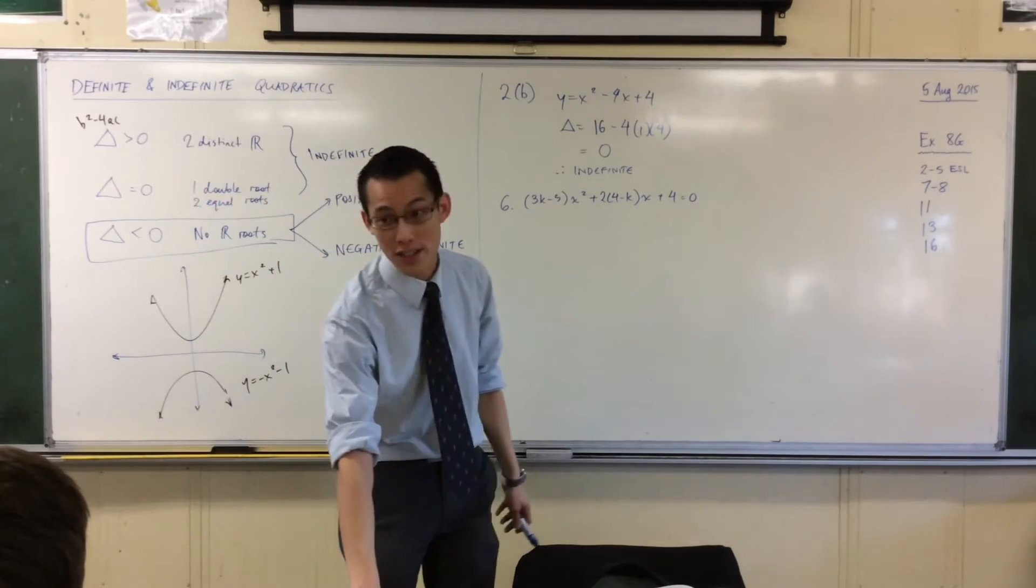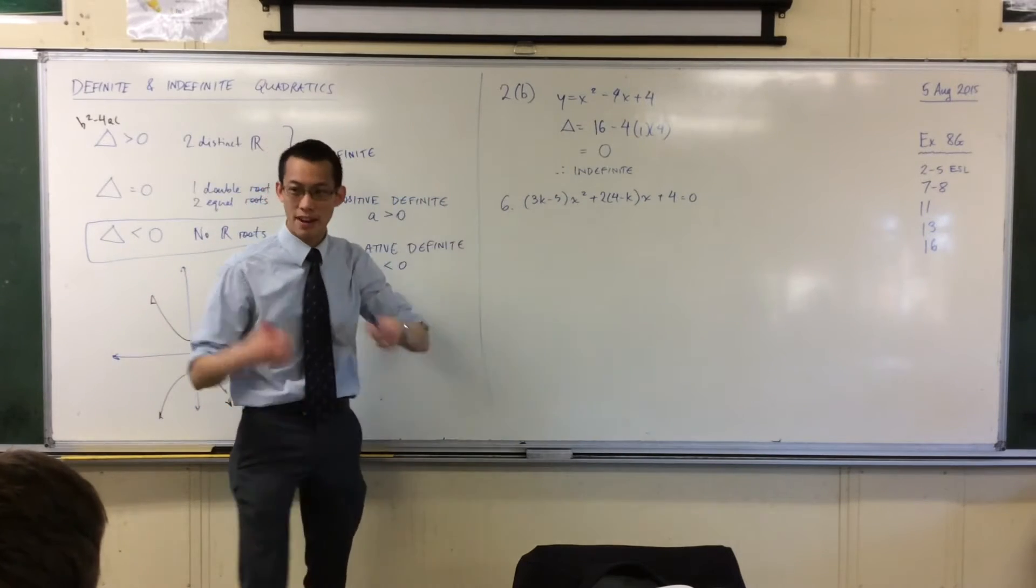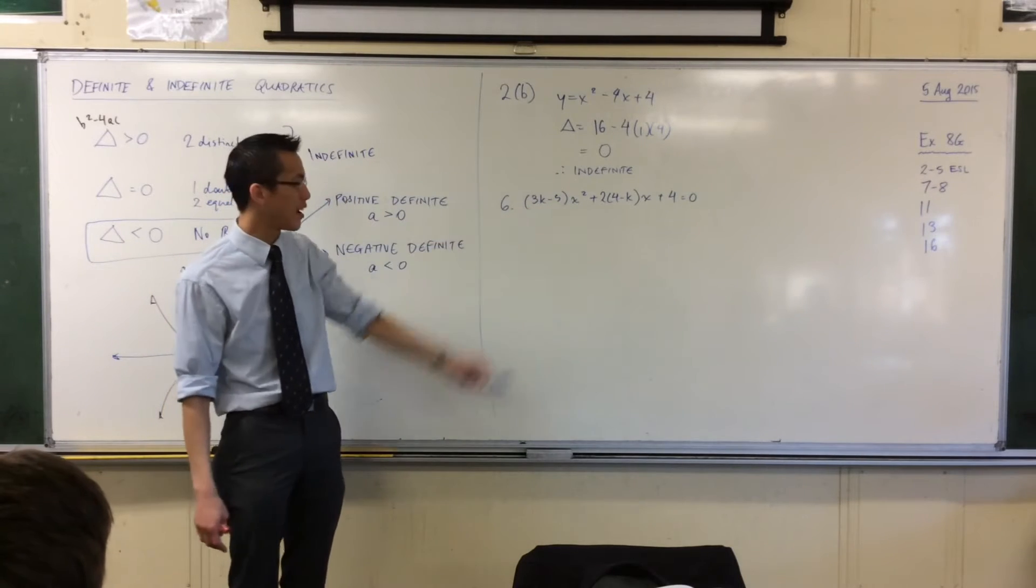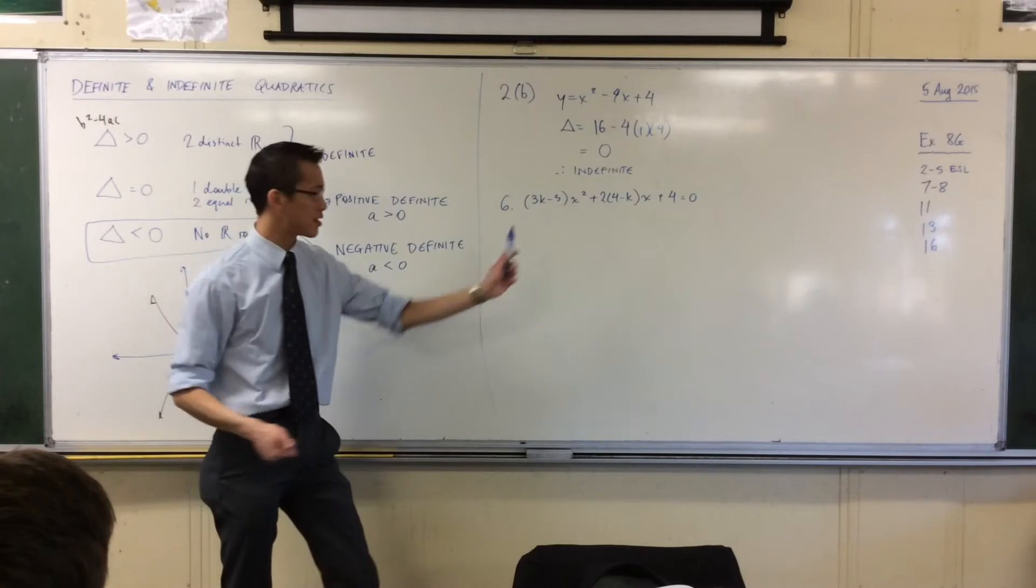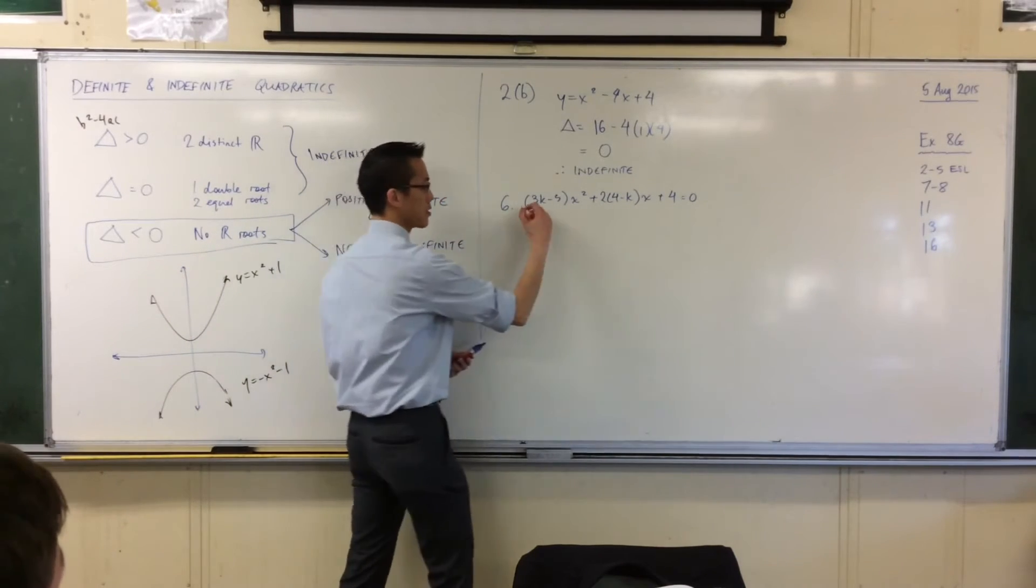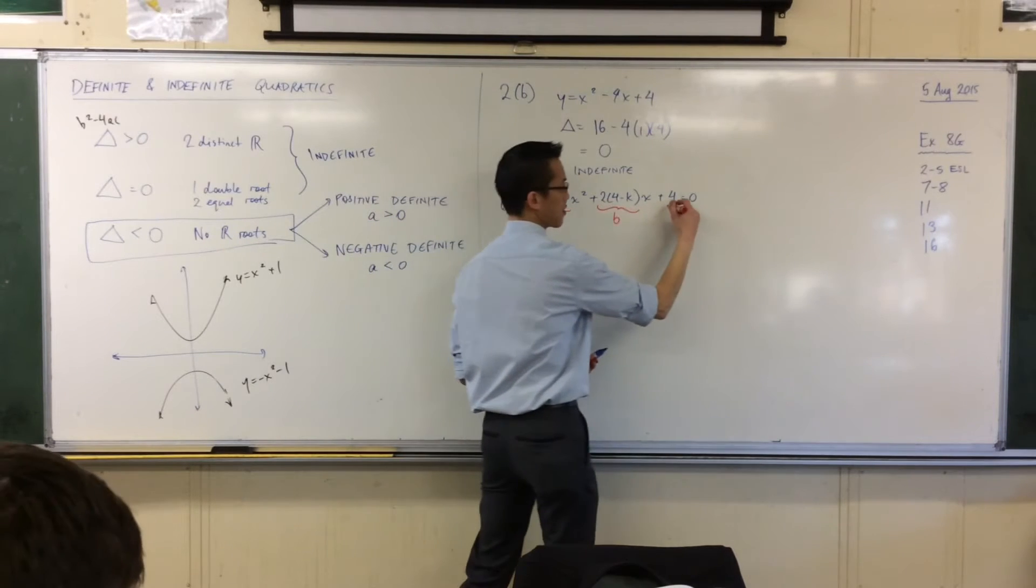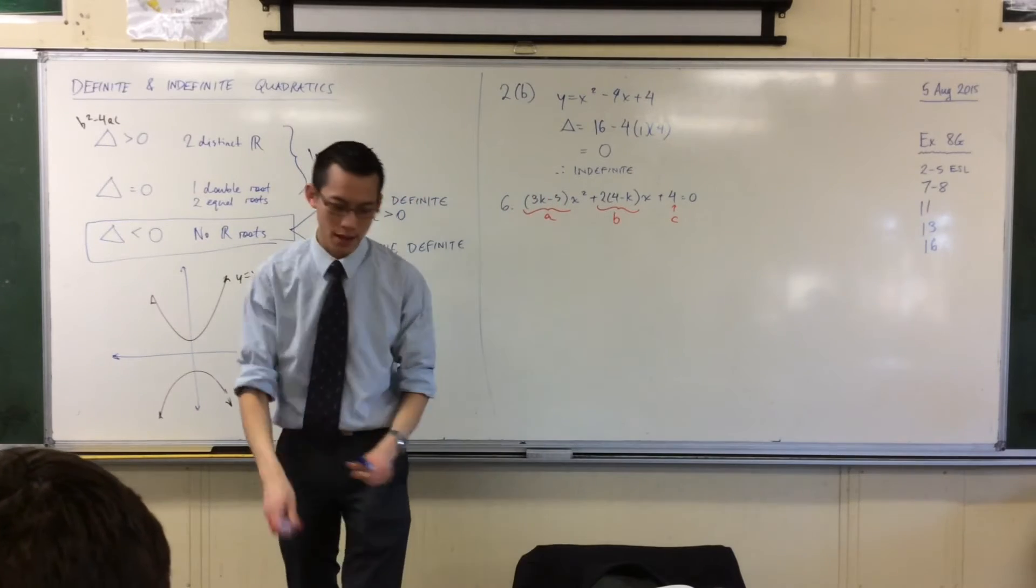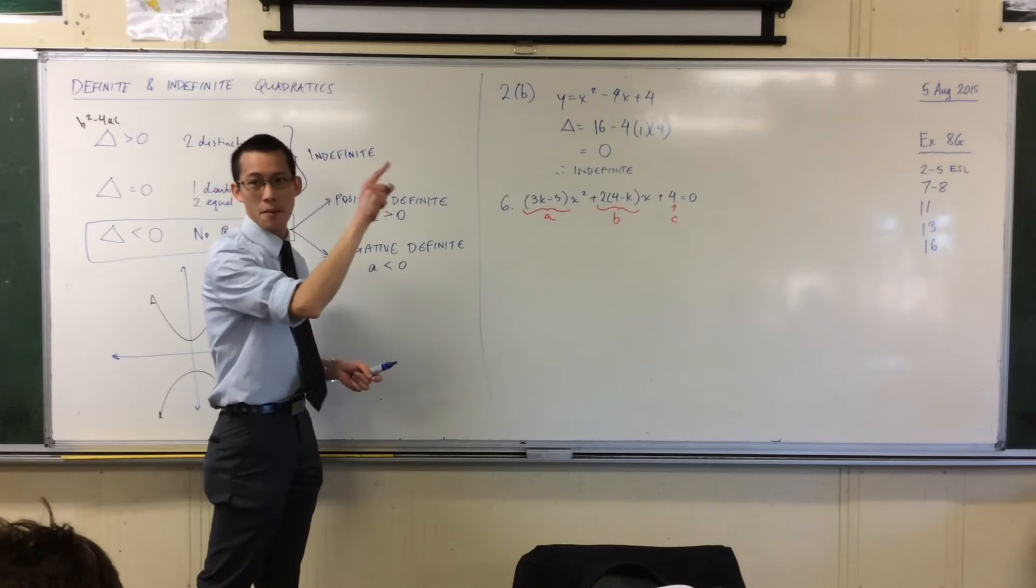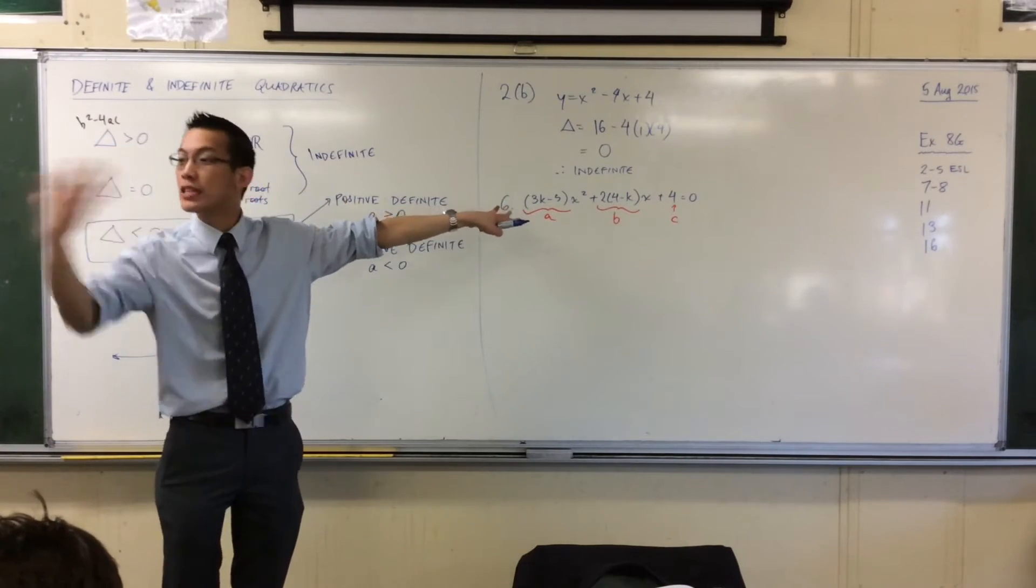So the very first step with questions like this, when you're trying to work out positive, negative, definite, you always need to start with the discriminant. And in fact, they even guide you in that direction. When you get a disastrous mess like this, number one, this is not that bad, because it's already been factorized for you. It's in general form. Do you see that?